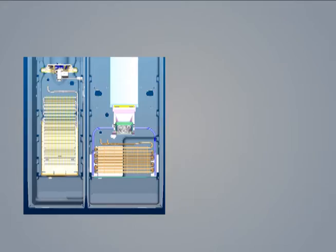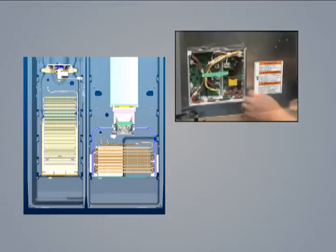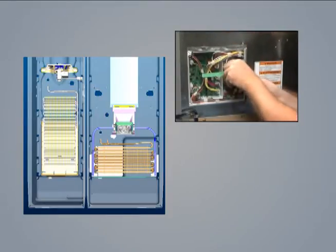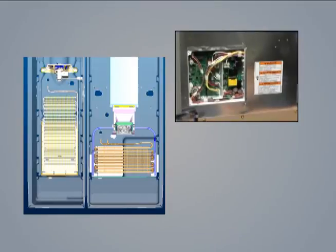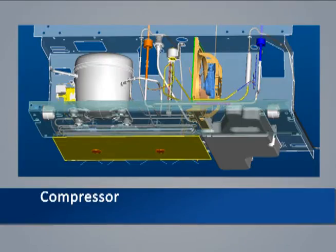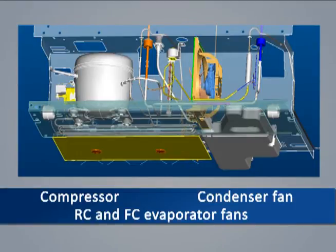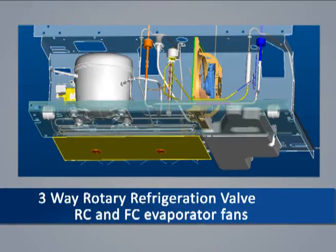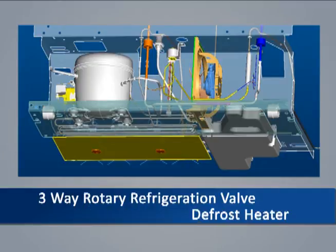Theory of Operation. The main control board software is designed to control the cooling system. Thermistors located in the RC and FC compartments provide temperature information to the board. All cooling and defrost decisions are made by the board based on those inputs and customer usage. Outputs from the board control the compressor, condenser fan, RC and FC evaporator fans, three-way rotary refrigerant valve, and the defrost heater.